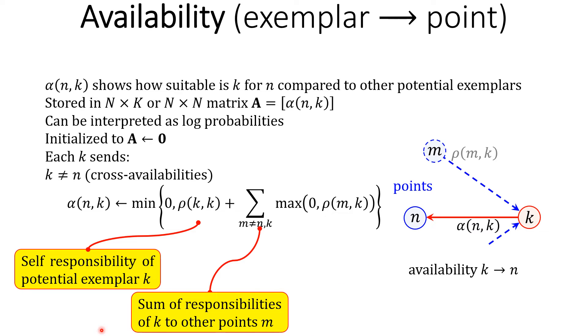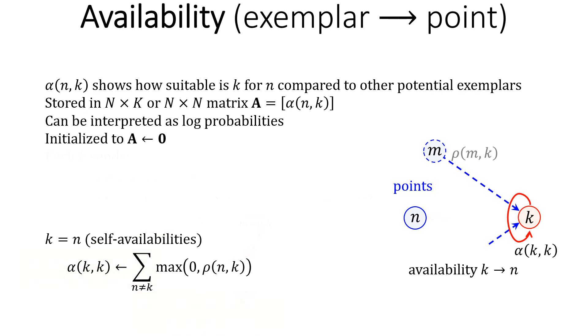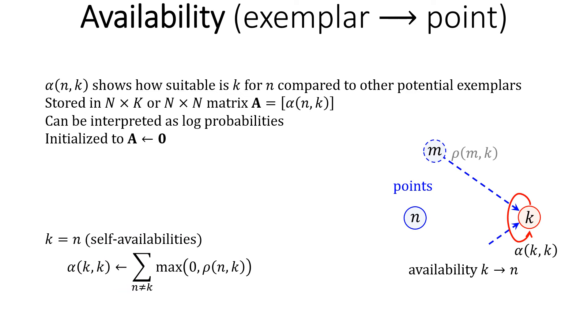To other points n, we upper bound alpha_nk so that it cannot be positive. For self-availabilities, we lower bound all other responsibilities so that they are never negative and then take their summation.